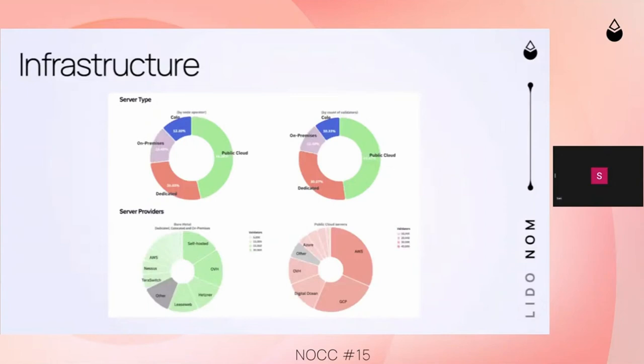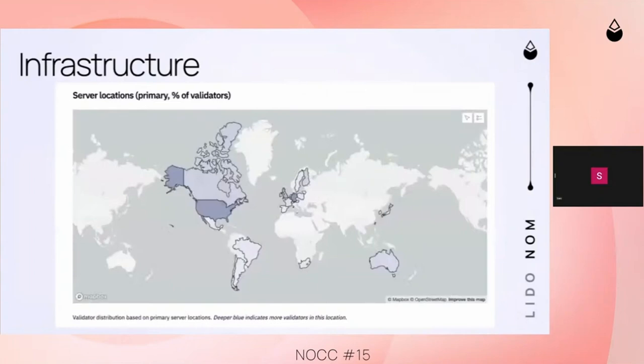The pie charts below show the distribution of bare metal server providers and also public cloud server providers — the distribution of these particular segments across the different providers. We try to encourage node operators to find a balance there as well.